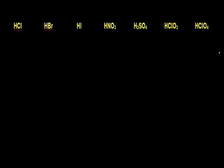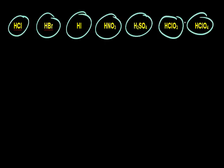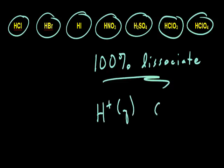One thing that will be helpful is reacquainting ourselves with all of the strong acids: hydrochloric acid, hydrobromic, hydroiodic, nitric, sulfuric, chloric, and perchloric acids are all examples of strong acids. The key thing with all strong acids is that they dissociate 100% in solution — for example, hydrochloric acid exists entirely as separate H+ aqueous ions and Cl− aqueous ions. This will have implications as to which acids can and which acids cannot dissolve different solid precipitates.